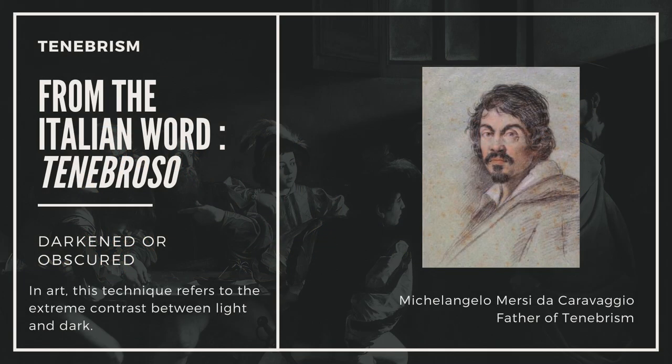According to the National Gallery, the word tenebrism comes from the Italian word tenebroso. It means darkened or obscured, and is a perfect description for this technique. Essentially, artists would only highlight the most important aspects of the painting, like facial features, hand gestures, etc., and the rest of the scene would be almost entirely in the dark. Some historians have even described it as a "violent contrast between the light and dark elements."